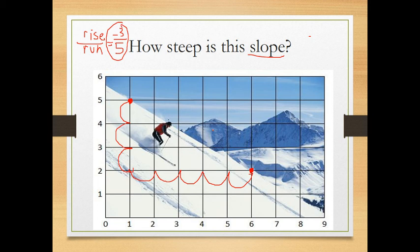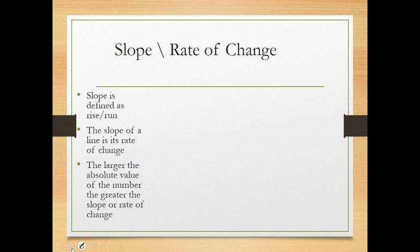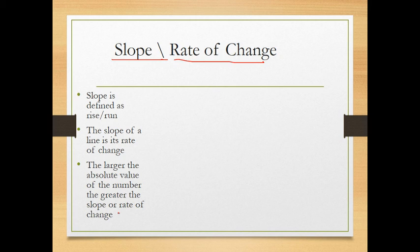Slope is defined as rise over run, or change in y over change in x — the same as vertical change over horizontal change. The slope of a line is its rate of change. Whenever you think of slope of a line, think rate of change — those two things mean the same thing. The larger the absolute value of the slope, the greater the rate of change, meaning the steeper the line.